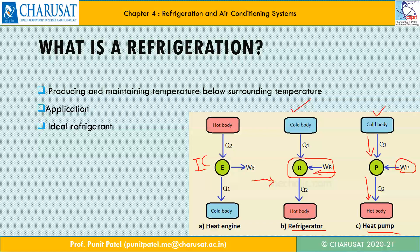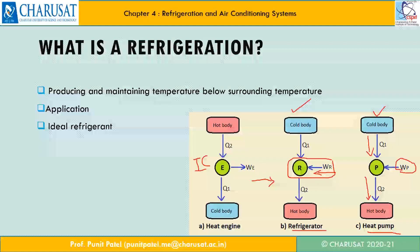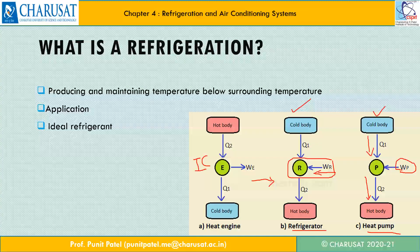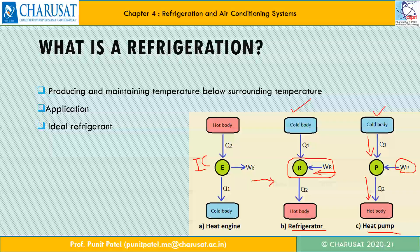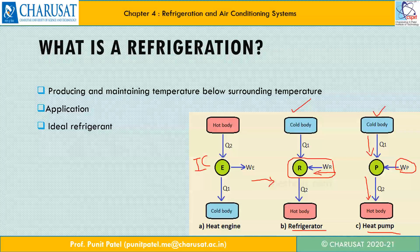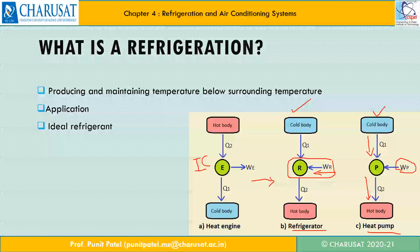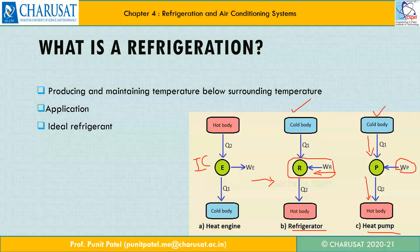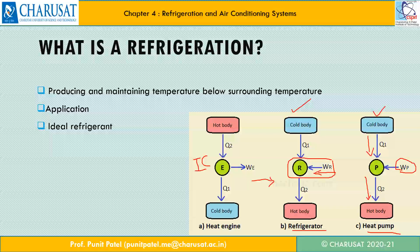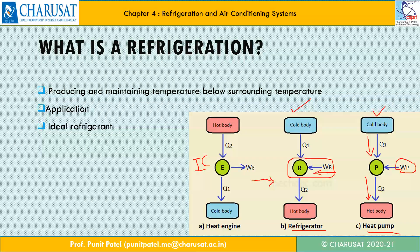Before we talk in detail, let us talk about the ideal refrigerant — meaning, if we want to design the refrigerating system, which kind of properties should we have in that particular refrigerant. It should have high latent heat of vaporization and low specific volume. It should have good thermal conductivity for rapid heat transfer. It should have low specific heat in liquid state and high specific heat in vapor state. It should have a low saturation pressure, a high coefficient of performance, and it should be economical in cost.